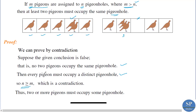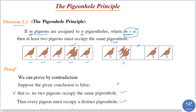We have m pigeons and n pigeonholes. If all pigeons occupy distinct pigeonholes, that is a contradiction because we have m is greater than n. So the assumption is wrong, and therefore two or more pigeons must occupy some pigeonhole. That is the pigeonhole principle.